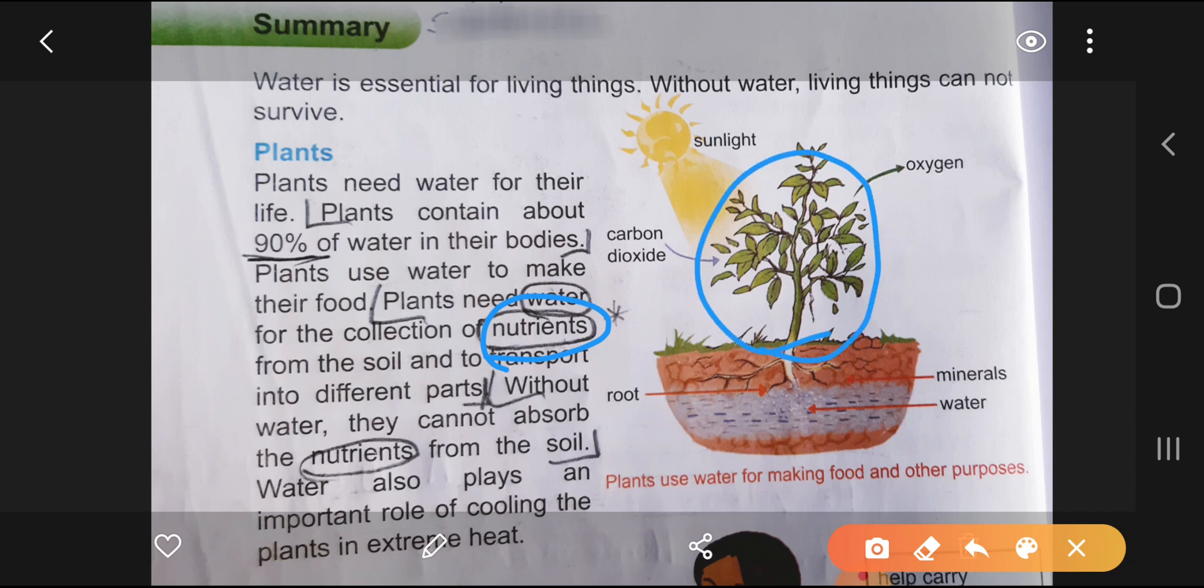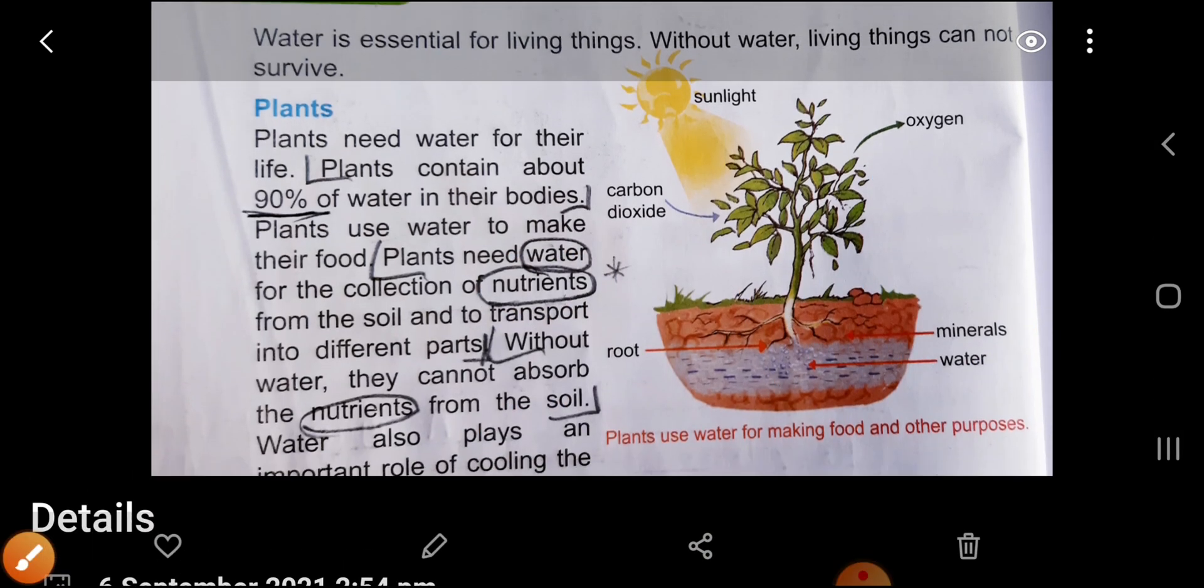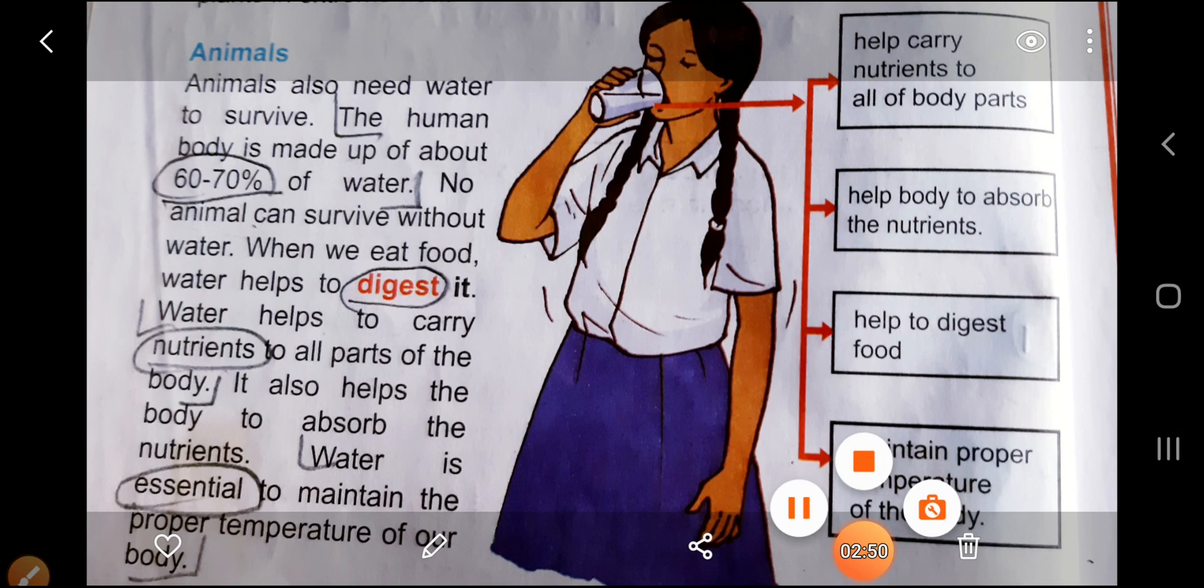They can find minerals and here is water and they absorb water. So water also plays an important role of cooling the plants in extreme heat. That means whenever temperature is high, it can help. This is page number 16 from your books, chapter 3.